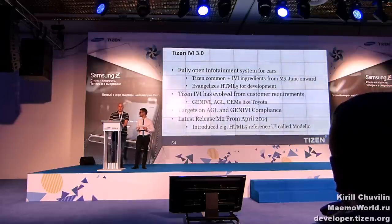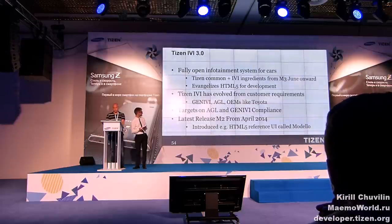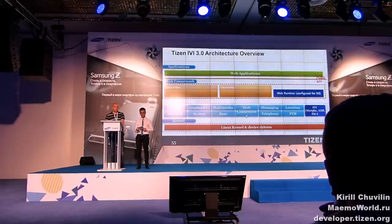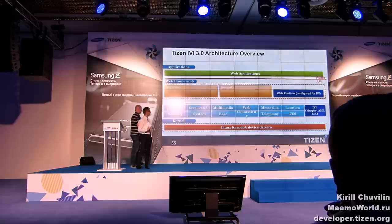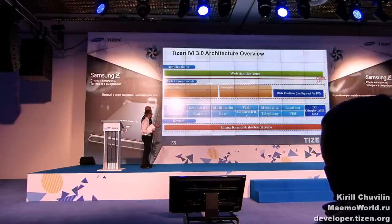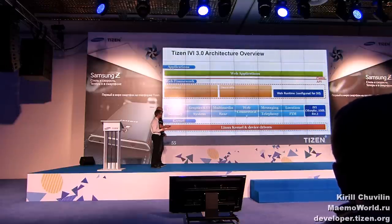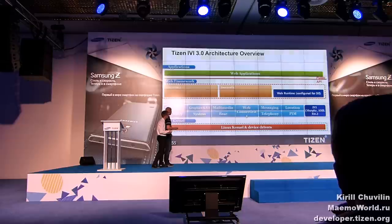Tizen IVI has the ambitious target to be compliant with both HL and GENIVI specifications, combining the best of both worlds. The latest IVI release is from April — it's 3.0 M2, and it introduced among other features a new HTML5 UI model. IVI architecture: I want to highlight how similar it is to full mobile architecture, although IVI is actually more complex. We have IVI-specific components like the Murphy policy manager, an automotive message broker for brokering CAN bus messages to applications, a web runtime configured for IVI, and IVI-specific device APIs.